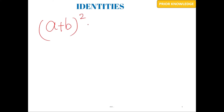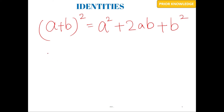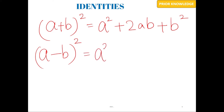Let's start with the prior knowledge you need for this topic. The identities you have to know are: a plus b, the whole square, equals a squared plus 2ab plus b squared. The second identity is a minus b, the whole square, giving you a squared minus 2ab plus b squared.